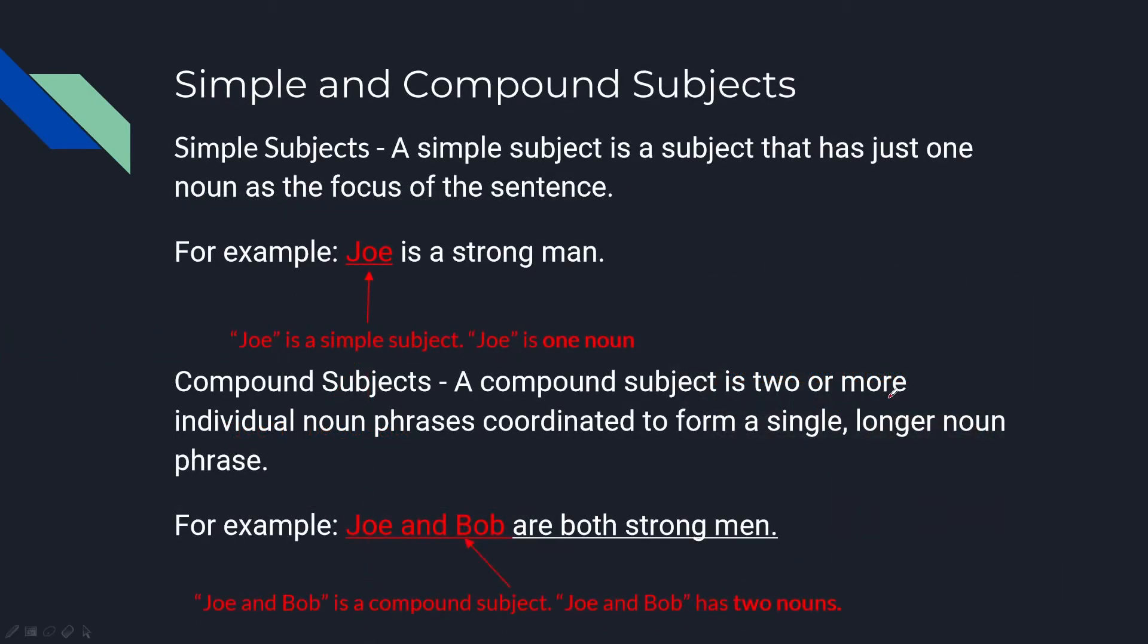Simple and compound subjects. Simple subjects: A simple subject is a subject that has just one noun as the focus of the sentence. For example, 'Joe is a strong man.' 'Joe' is a simple subject - 'Joe' is one noun.